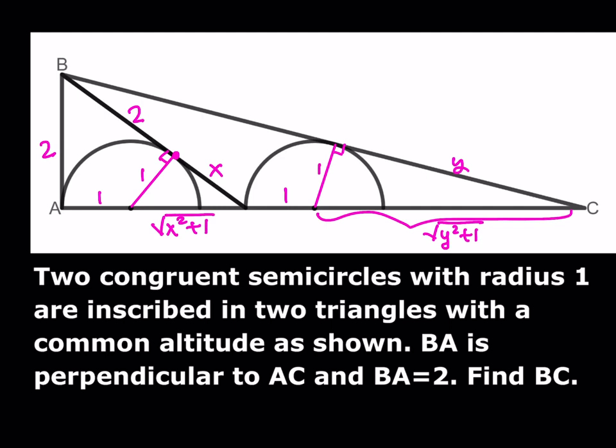We're going to use similarity. If you call this angle alpha and this one beta, then alpha plus beta is 90 degrees. Therefore, this is also going to be beta. So we have an alpha-beta-90 triangle and another alpha-beta-90 triangle, and they are similar.